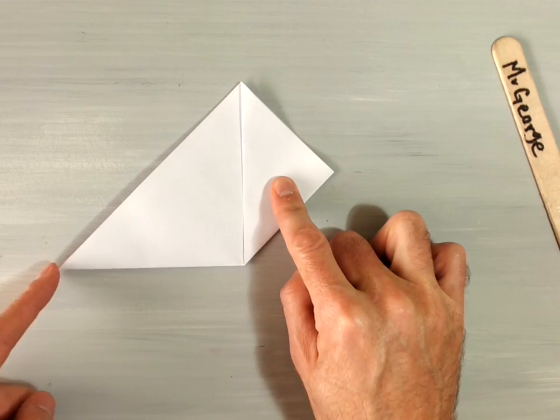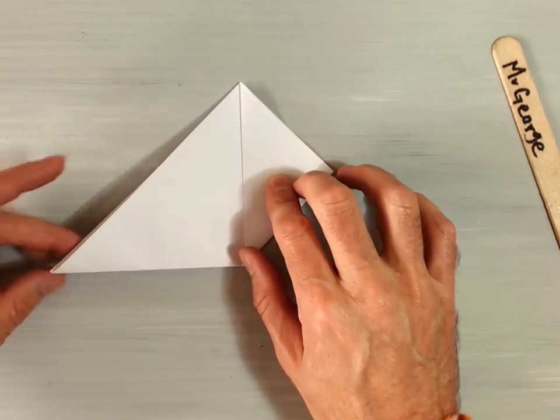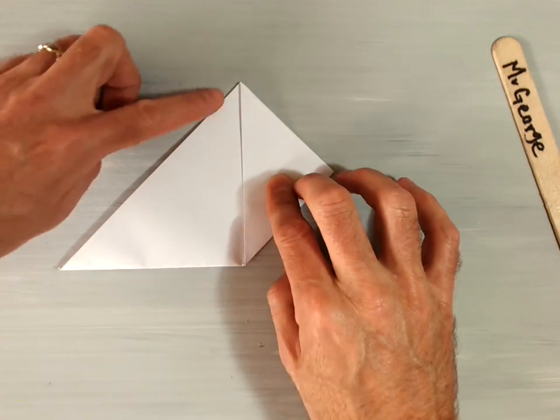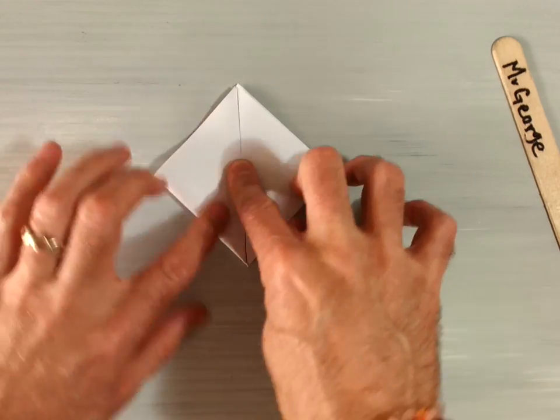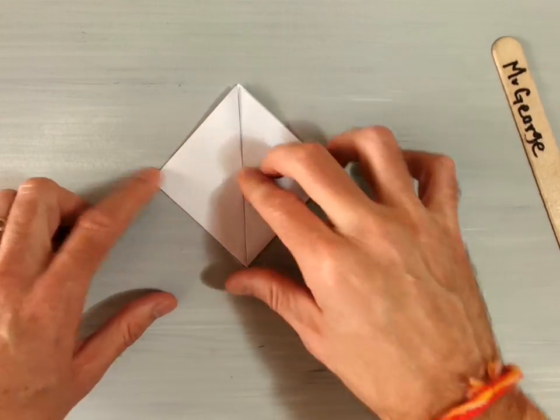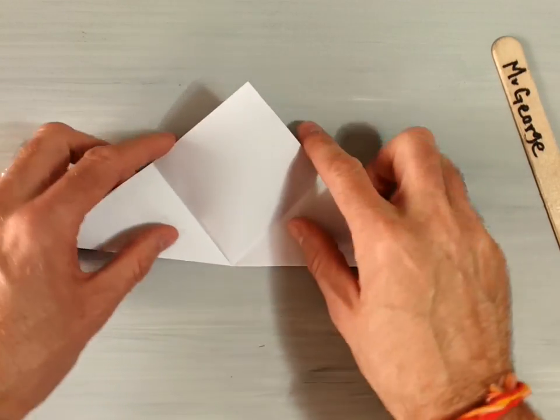Now, do the same thing, because most of origami has to do with symmetry as well as fractions. Take this corner here and bring it up to the top and fold it like that. Now you have your model with these two parts and those two parts.